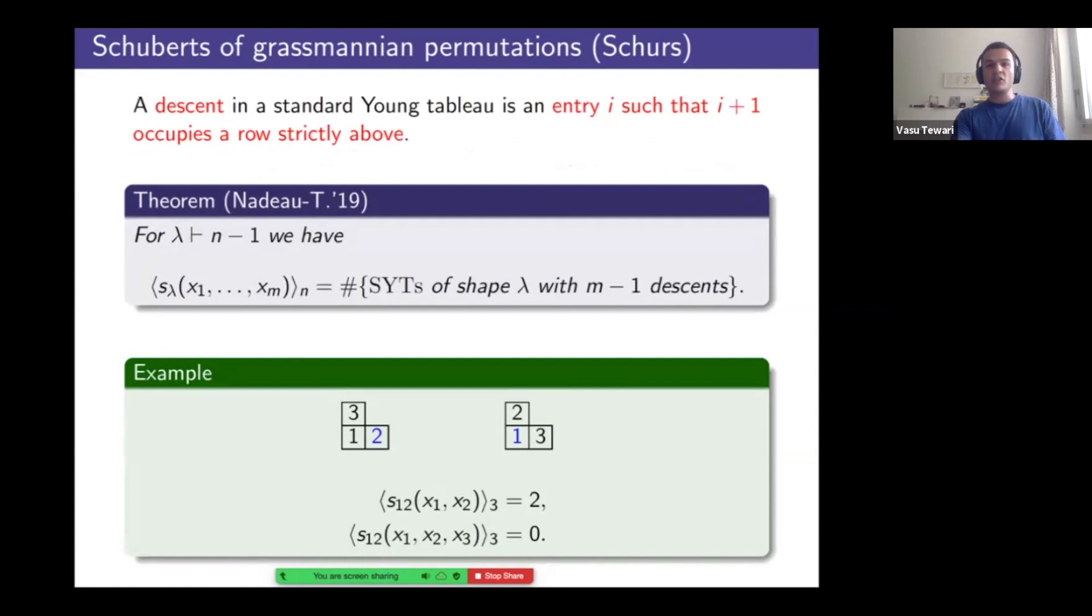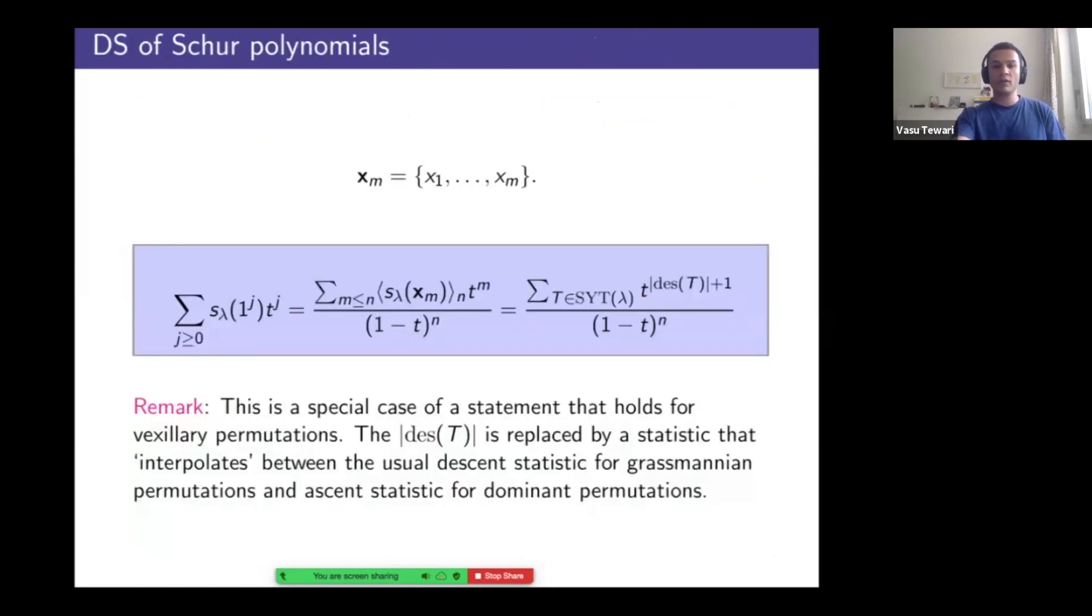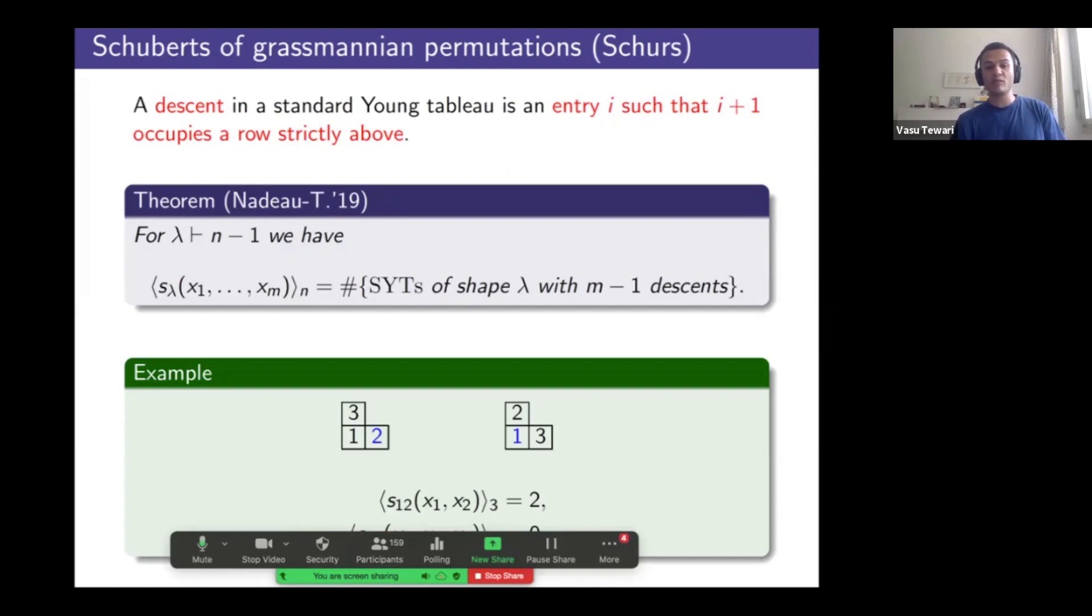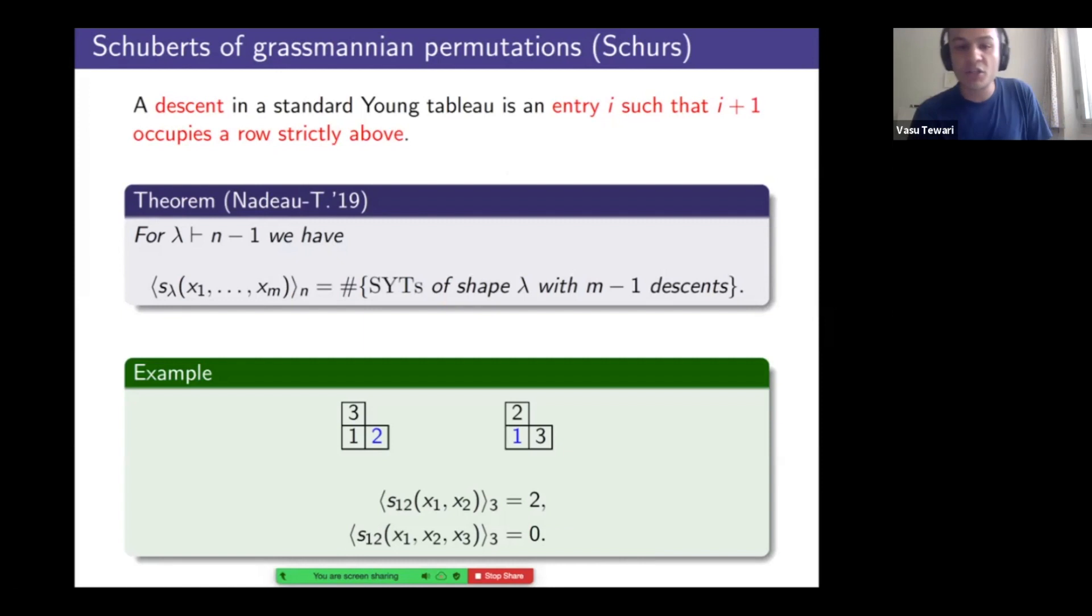So the definition of a descent in a standard Young tableau is any entry i, wherein going from i to i plus one, you go above. Okay. So this is French notation. And in fact, I'm writing partitions in a non-standard way, following Lascoux. So increasing as we go to the right. And for Grassmannian Schubert's divided symmetrization is counting standard Young tableau of the shape lambda determined by the code. And the number of descents allowed is m minus one. So if you look at this example, there's two tableau of shape 1, 2, each have one descent each, that tells you that the divided symmetrization of this Schur polynomial gets you two. And had you asked for the divided symmetrization of three variables, you would get zero because there's no tableau with two descents. And alternatively, you probably realized this polynomial s_{1,2}(x1, x2, x3) lies in the invariant ideal. So this was supposed to vanish. So that's a good sanity check.